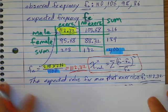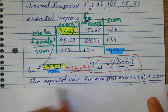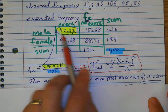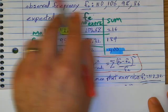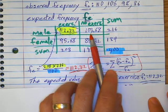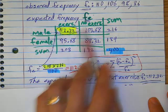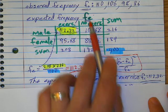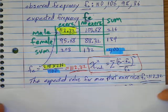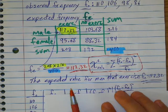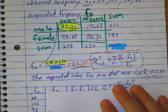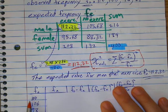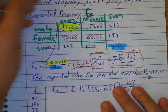So this is the expected frequency for men that exercise. This value here is the expected frequency for men that don't exercise. So what's going to happen is I take, in order to figure out what this is, I take our frequency, our observed frequency,